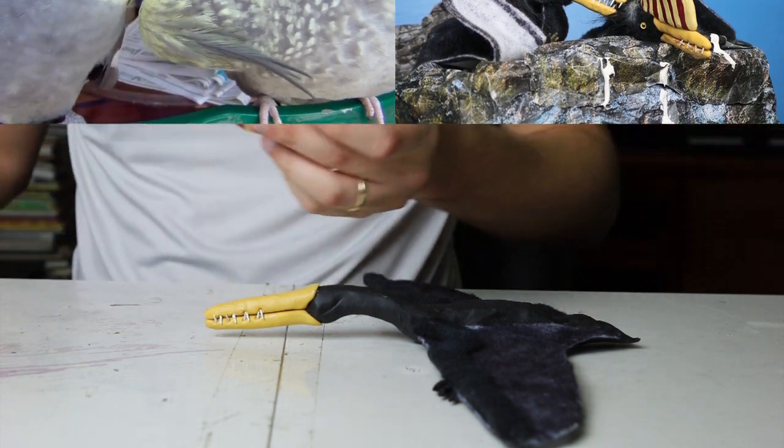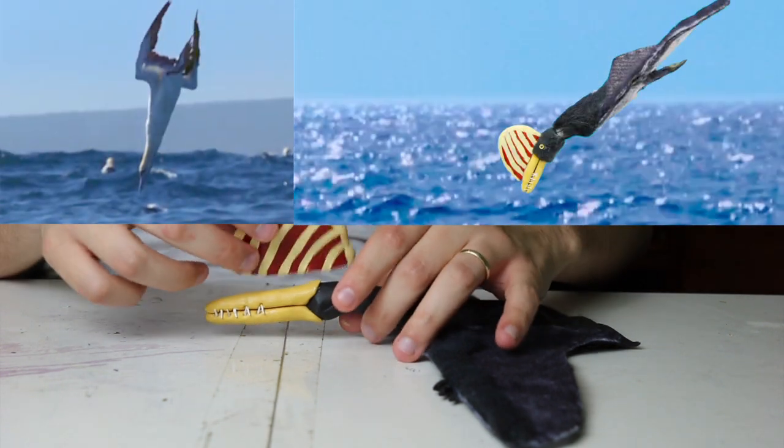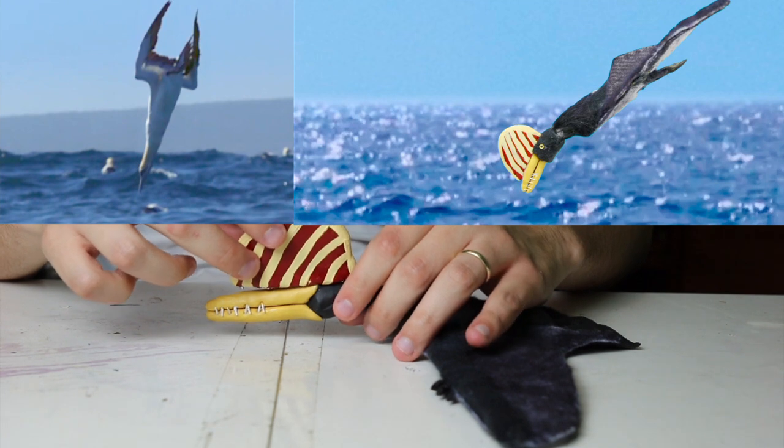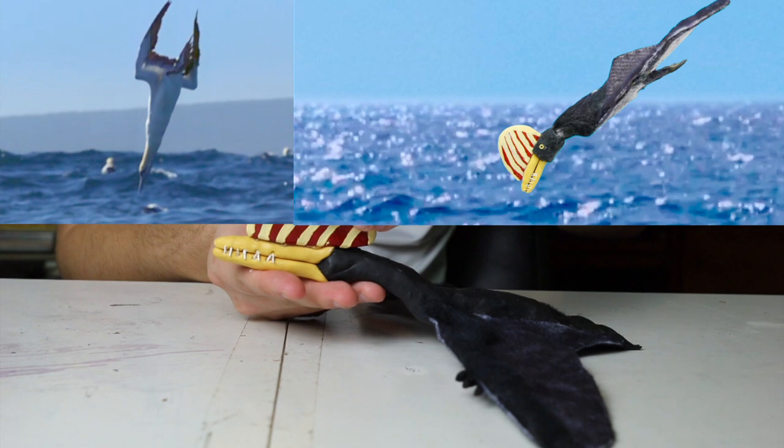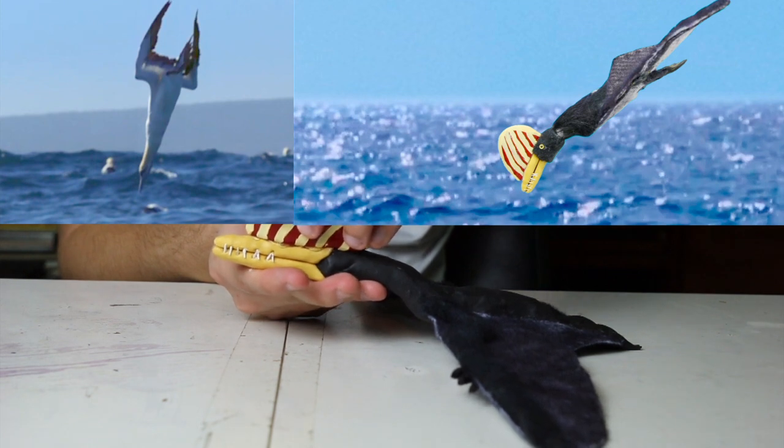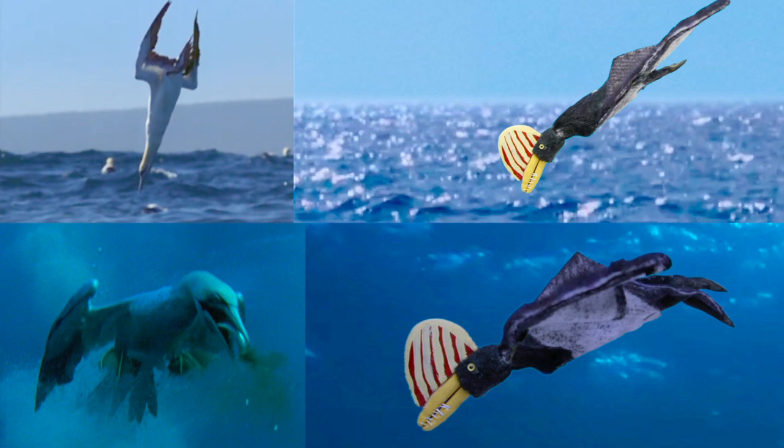I also have them diving for fish in a similar way to birds like gannets, where they fold up their wings and dive into the water head first from above and swim around with their wings above their heads kicking with their feet. It's believed that pterosaurs could swim to at least an extent. I don't have them swimming quite as fast as gannets are able to, but for the most part that's where I'm getting the idea for this behavior from.